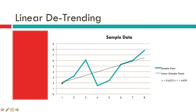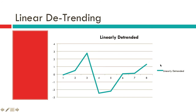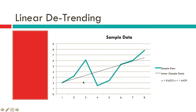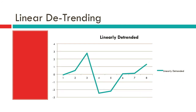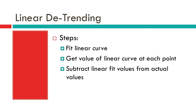We subtract those line values off. In table form, y-prime are the values of the line at the x points, and the actual data minus y-prime gives us the detrended result. A plot of that linearly detrended data looks like this. It looks pretty good, but that's only because we have one trend here. If we had multiple trends — an upward stretch and a downward stretch — linear detrending won't work as well.